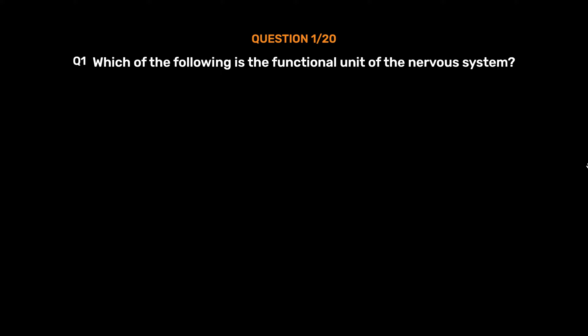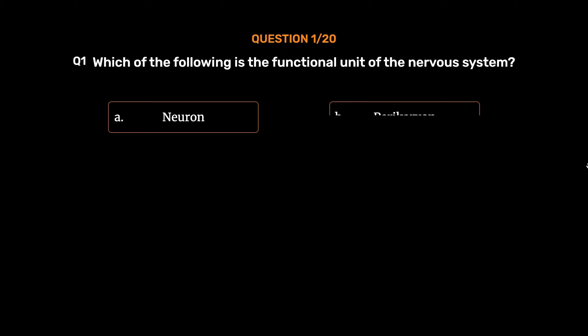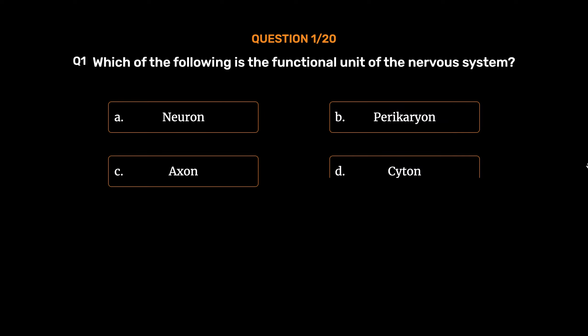Question number 1. Which of the following is the functional unit of the nervous system? Option A: Neuron. Option B: Pericario. Option C: Axon. Option D: Cytin. The correct answer is Option A: Neuron.